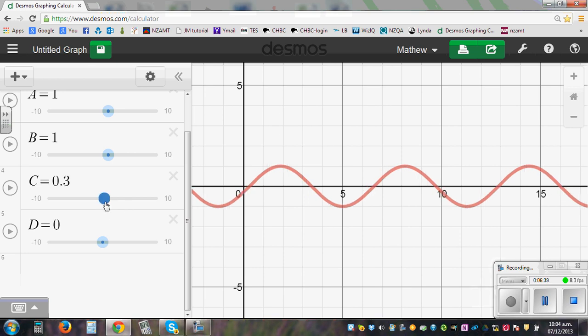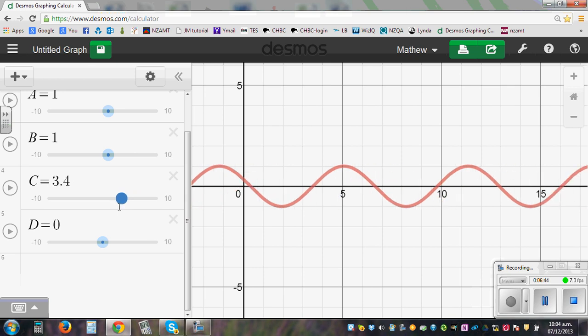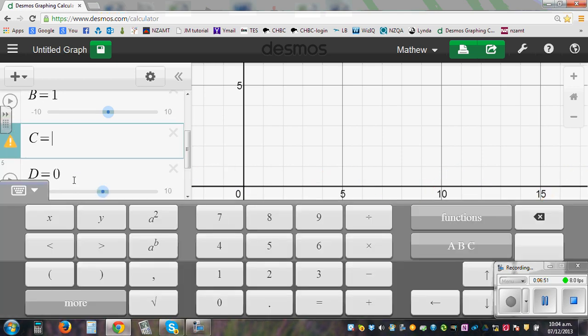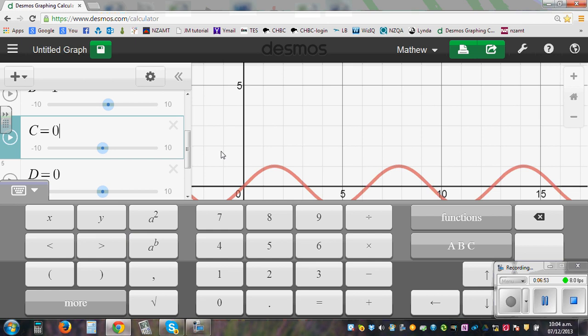So if you move C, the graph moves to the right. If it becomes positive, it moves to the right. And if it becomes negative, it moves to the left. So again, let me make it 0.